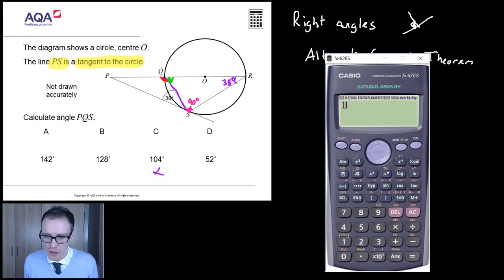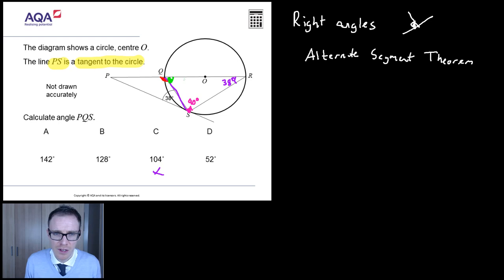So we know that we've got 180 degrees in a triangle. We'll take off our 90 degrees, which was our right angle. We'll take off our 38 degrees, which we got from angles in the same segment. And we end up with 52 degrees. So that angle there is 52.